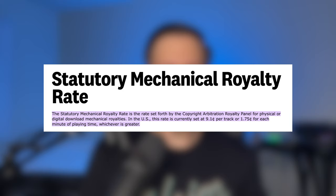That mechanical royalty rate is currently 9.1 cents per download, or for streaming it's going to vary depending on the streaming service, but it averages about six cents per 100 streams. Most streaming platforms like Spotify or Apple Music will take care of paying this mechanical royalty to the songwriters and publishers, so if you are just uploading a cover song to streaming platforms, you won't have to do anything additional.